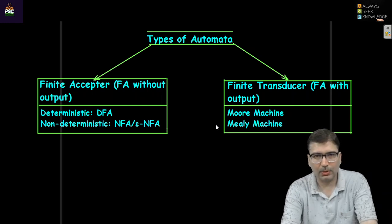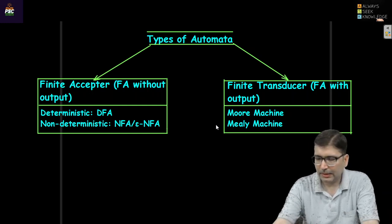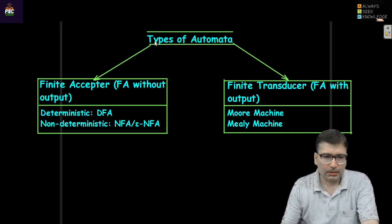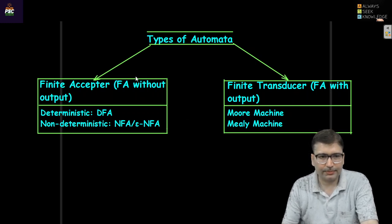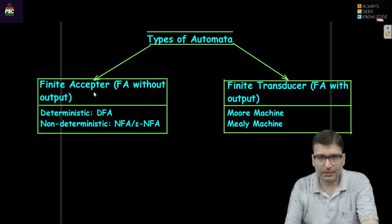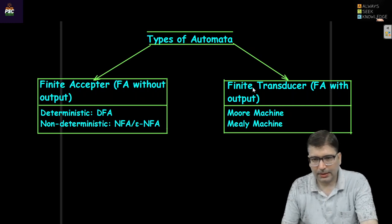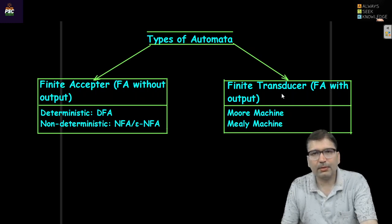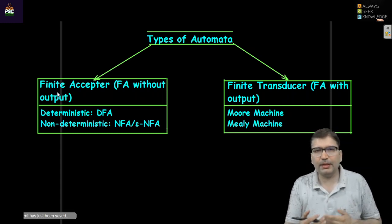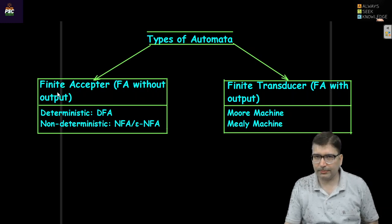Welcome to this lecture. We are going to discuss different types of automaton. Basically there are two classifications: one type we consider as a finite acceptor, which can accept a set of strings for any language, and another category we consider a finite transducer. The term 'finite' defines that there will be a finite number of states.